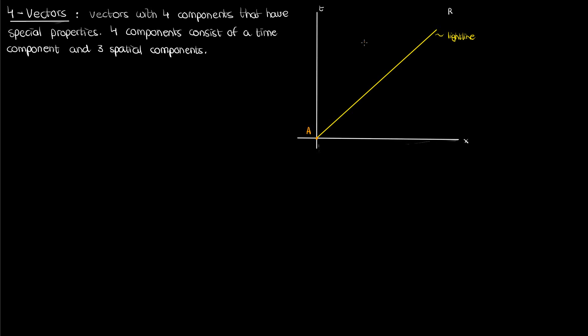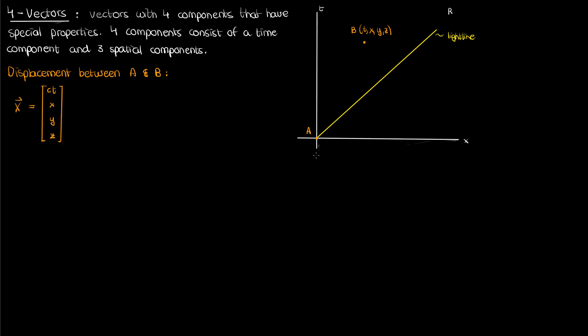If I then draw an event B that occurs at some arbitrary coordinate in spacetime given by t, x, y, and z, then the displacement four vector, which I'll call capital X, going from A to B is just c times the difference in the time coordinates of A and B, so c times t because A is at the origin, followed by x, y, and z — again, since A is at the origin, we can just straight up use the spatial coordinates of B. In my Minkowski metric video, I used delta R instead of capital X for the displacement four vector, but in this video my notation is slightly different, so just bear that inconsistency in mind.